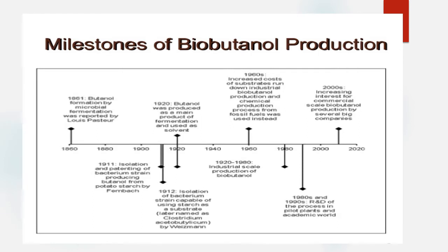In 1912, the bacteria isolated from starch were identified and later named Clostridium acetobutylicum. In the 1920s, biobutanol production began for use as a solvent, and industrial production continued from the 1920s through to around 1980. In the 1960s, due to high substrate costs, chemical methods using fossil fuels were adopted.